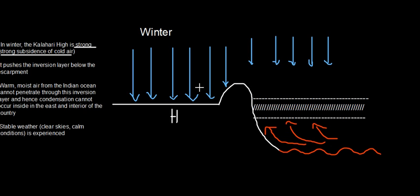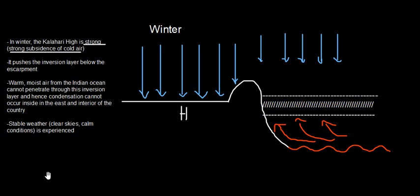If the warm moist air had been able to enter, it would have risen up, cooled down, condensation would have occurred, and it would have formed rainfall. But since it cannot penetrate through the inversion layer, we see stable weather instead. Stable weather is characterized by clear skies and calm conditions. In winter, this stable weather results from the strong subsidence of the Kalahari High pushing down the inversion layer, blocking the warm moist air coming in from the Indian Ocean.